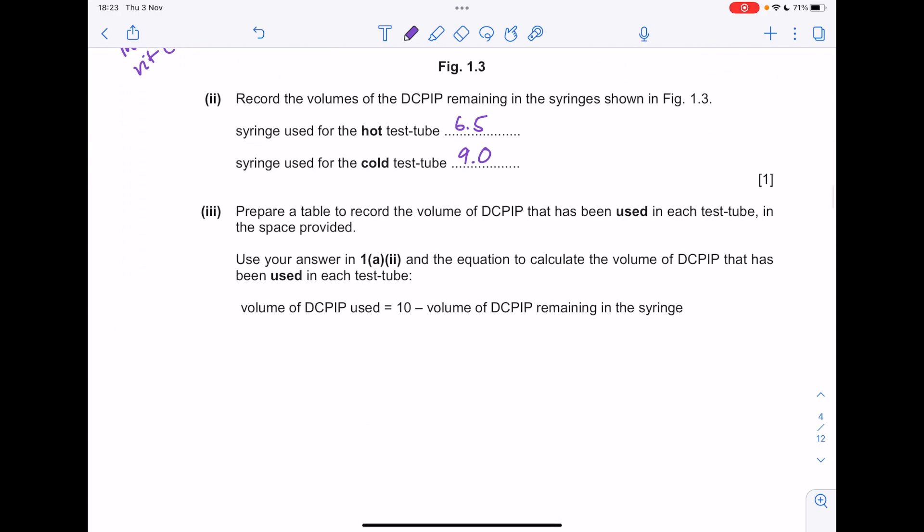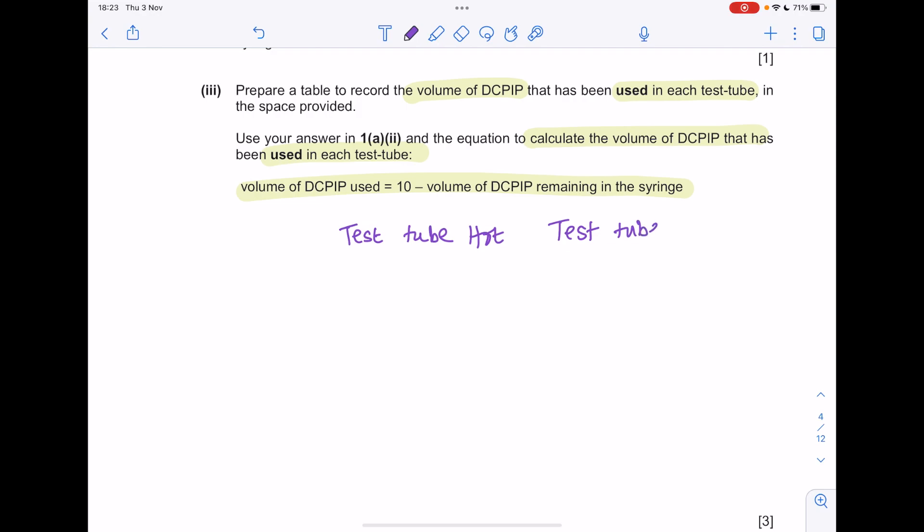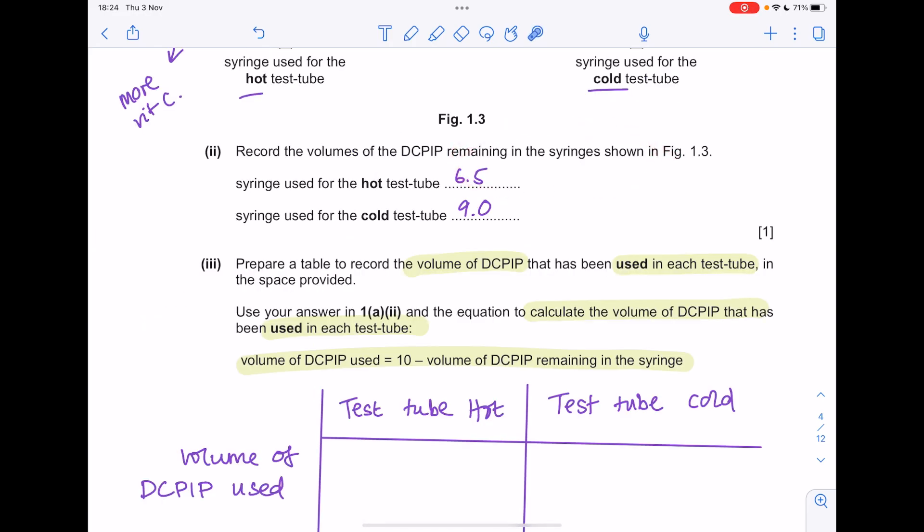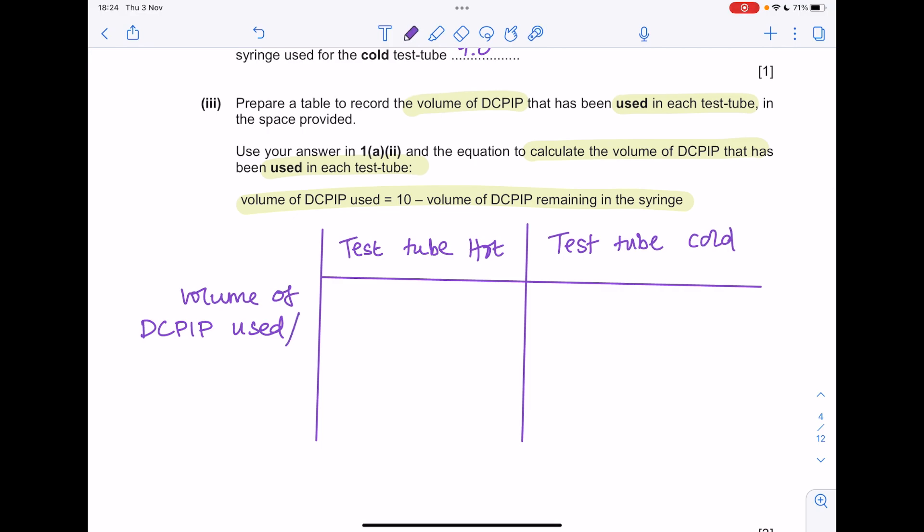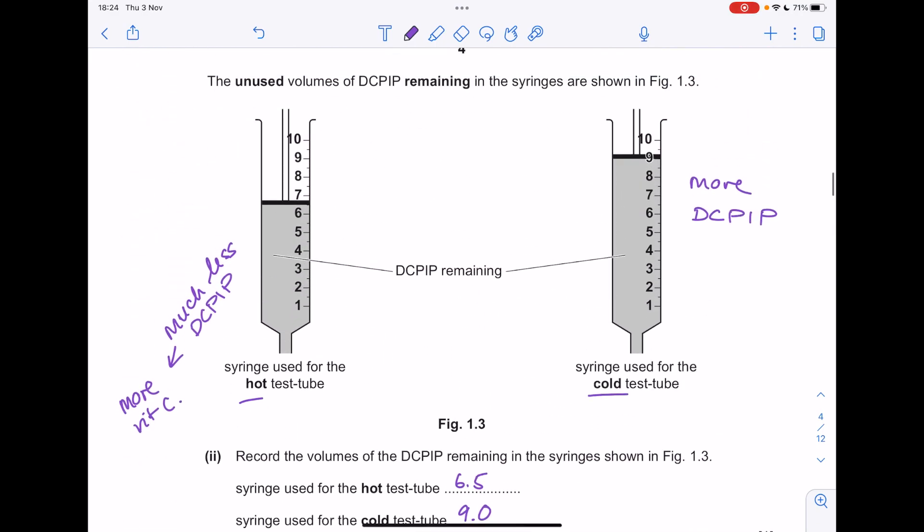Prepare a table to record the volume of DCPIP that was used in each test tube. Use your answers from part 2 in the equation to calculate the volume of DCPIP that has been used. So what are the test tubes called? Hot and cold. Although they didn't explicitly ask for a unit here, I'm going to put centimeters cubed. Now be careful, remember it's to do with what was used. We started with 10, we had left 6.5, so what was used was 3.5. We started with 10, what we had left was 9, so we had 1 remaining.